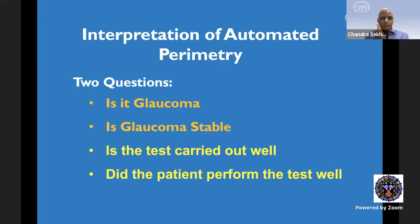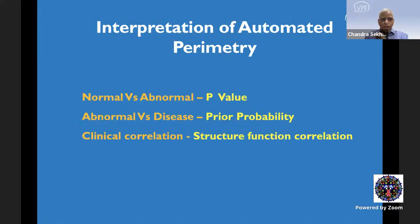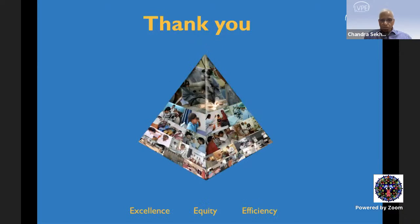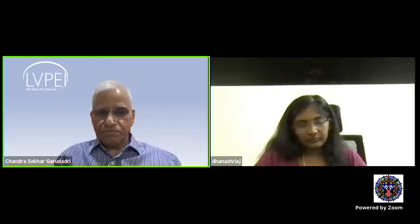To summarize: to answer whether it is glaucoma or whether it is stable, we need to determine if the test was carried out well and if the patient performed well. We need to understand the p-value and statistical abnormality given by the test result, and clinically correlate to differentiate a statistical abnormality from true disease — however sophisticated the test may be. We need to be in the driving seat, and based on prior probability from clinical findings, decide whether the statistical abnormality translates to disease — in the context of visual field examination done by structure-function correlation.